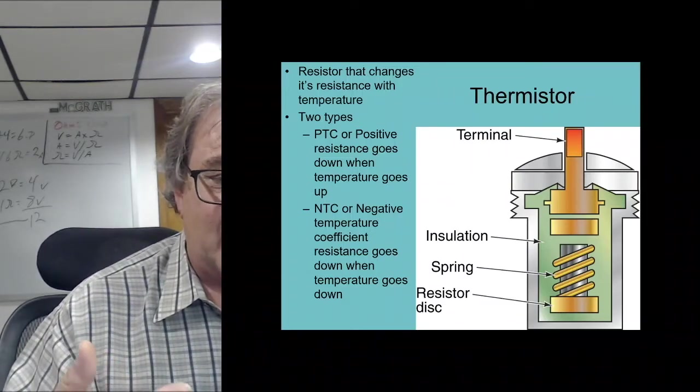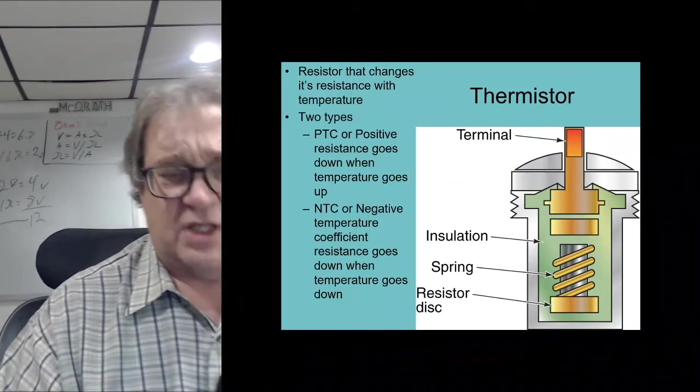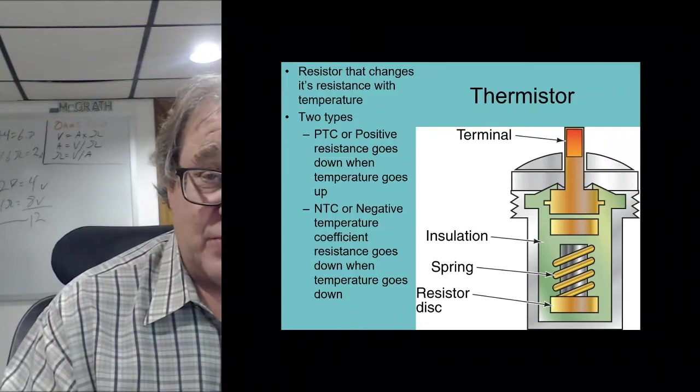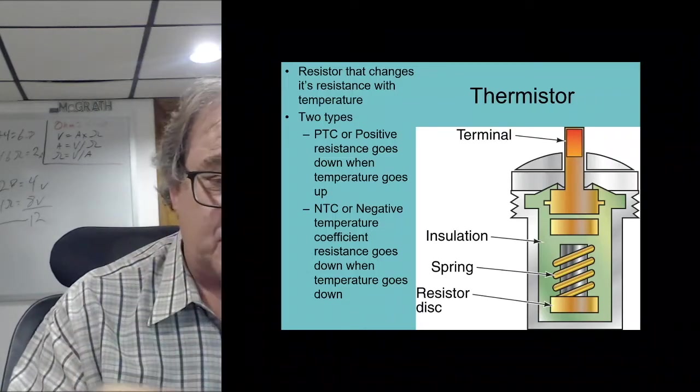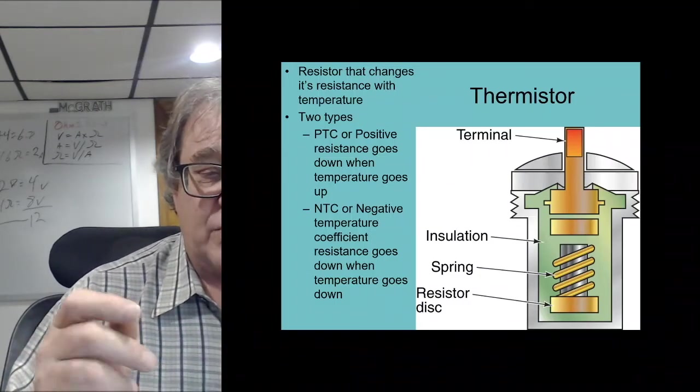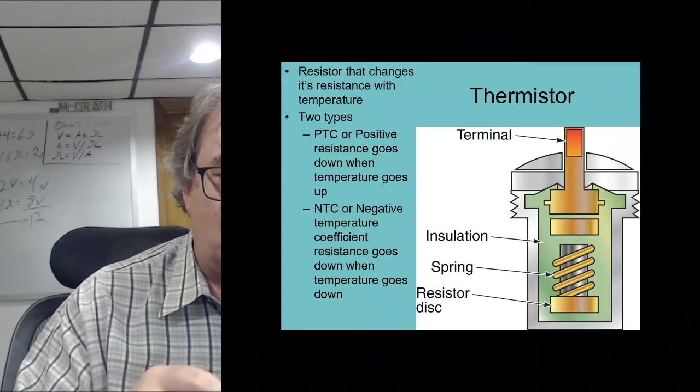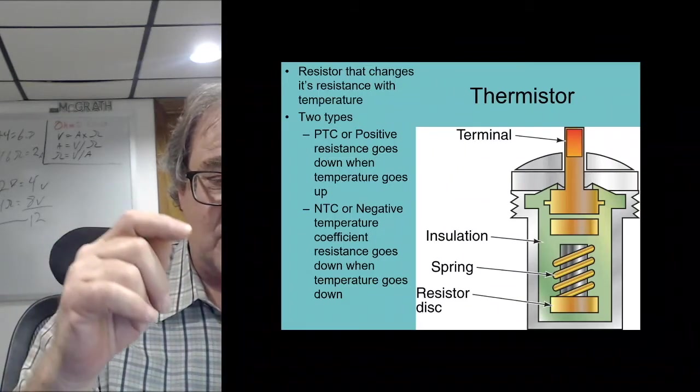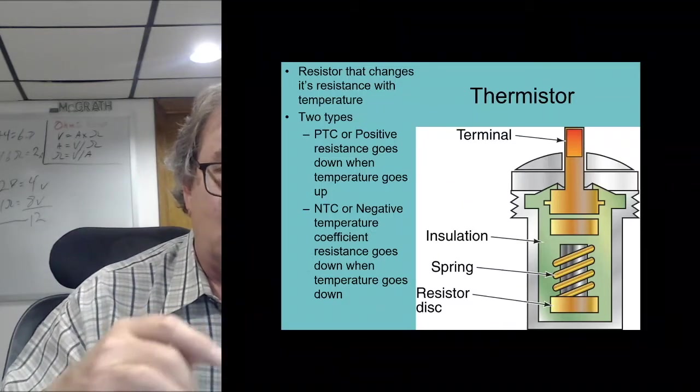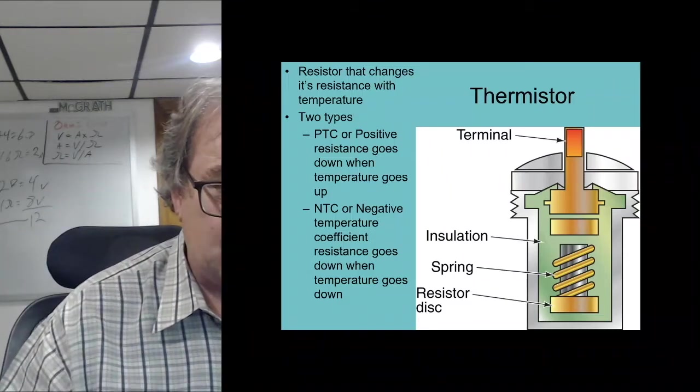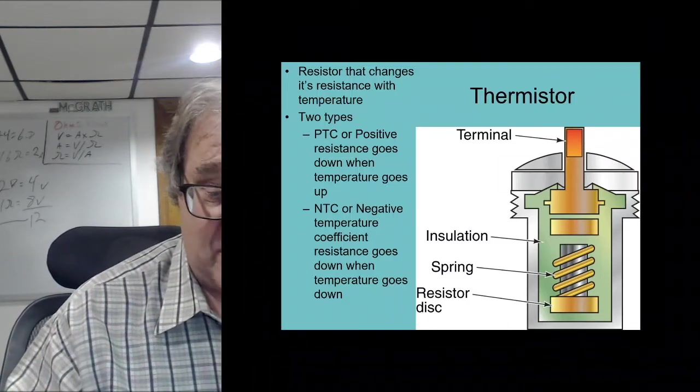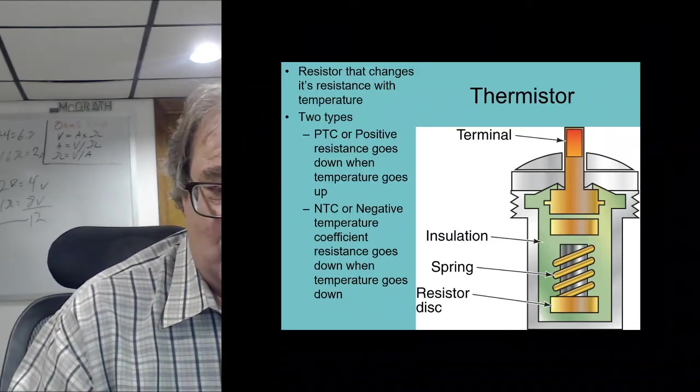Here is a thermistor - that's the wrong picture. Anyways, they change their resistance based on temperature. Two different types - there's PTC and NTC. PTC is positive - resistance goes down when temperature goes up. So we get more resistance as the temperature goes up. And NTC, it gets more resistance as the temperature goes down. Other than that they pretty much work the same, except they're opposite. And we use that usually with some type of temperature sensor to transmit this current.